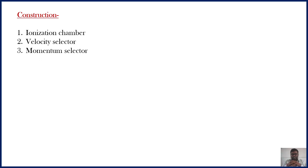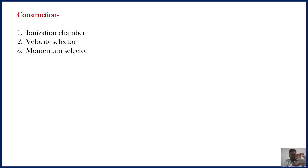The third part is the momentum selector, also called the vacuum chamber. In the momentum selector, a magnetic field is applied. Due to the magnetic field, as the ions formed in the ionization chamber cross the region of velocity selector and enter into the momentum selector, the ions take circular paths due to the magnetic field applied in the momentum selector.